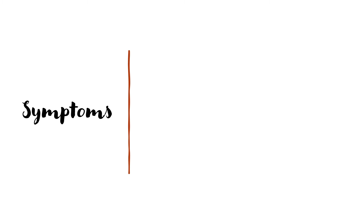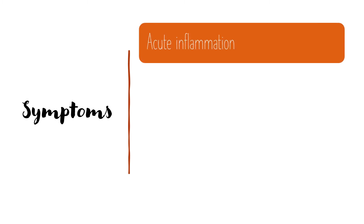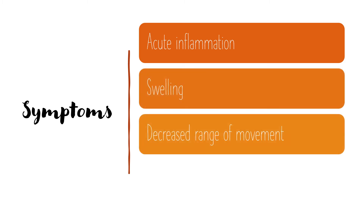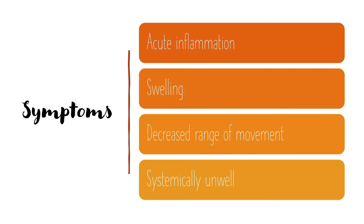So how do we recognise patients with septic arthritis? There will be a history of very acute inflammation. This may be difficult to diagnose in patients with underlying joint disease, so we are really looking for an acute or chronic change. There'll be some swelling around the joint, a decreased range of movement, and because this infection is septic in nature, we may be expecting these patients to be systemically unwell.